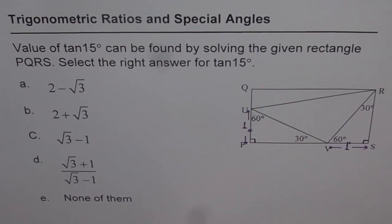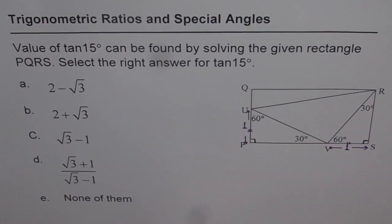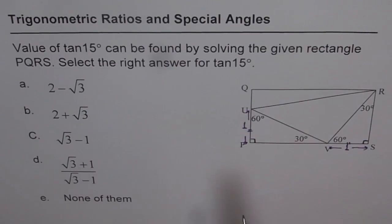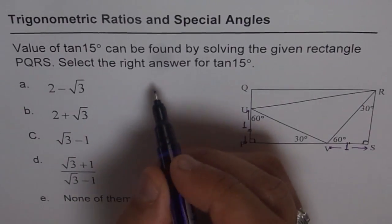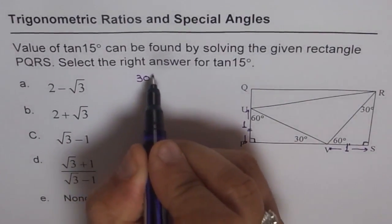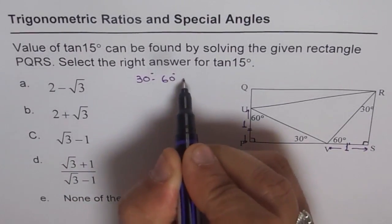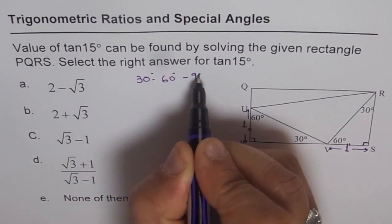You can pause the video, select your answer and then look into my suggestion. To solve this question, we can use primary trigonometric ratios, but I rather prefer to use our special triangle, which is the 30-60-90 degree triangle.